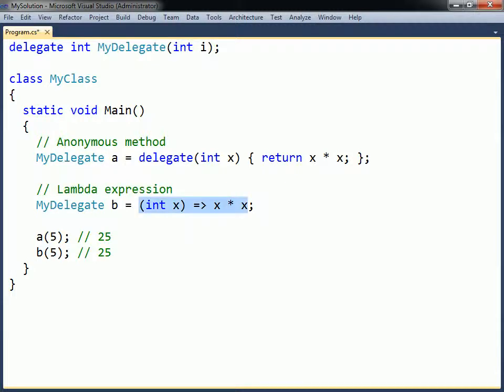A lambda expression is written as a parameter list, followed by the lambda operator, and an expression. Like the anonymous method, the lambda must match the signature of the delegate it is assigned to.